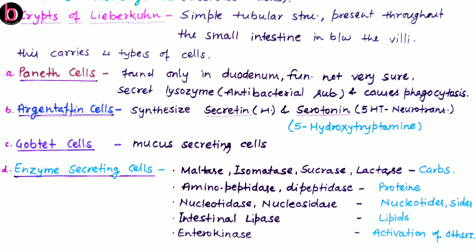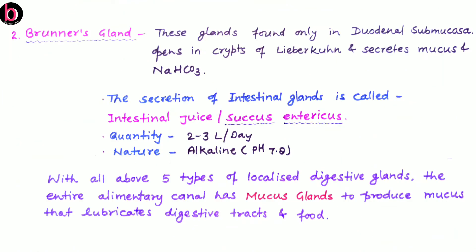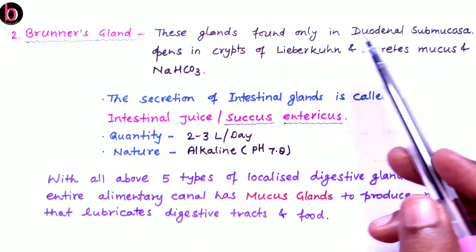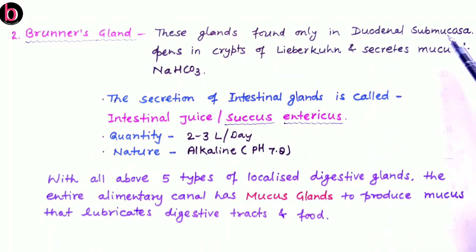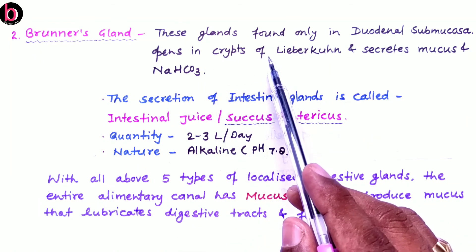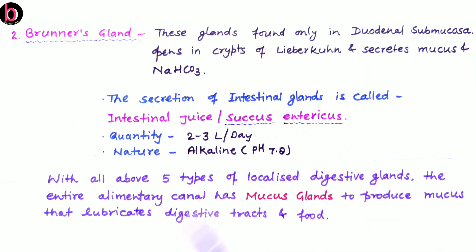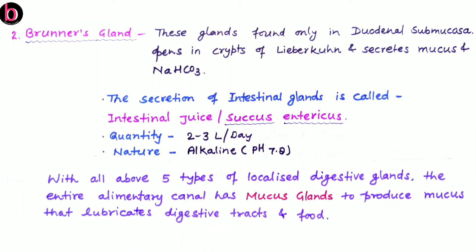Enterokinase never plays a direct role in digestion, but is helpful for activation of trypsinogen into trypsin, which is secreted by the exocrine part of the pancreas and helps in protein digestion. The second part of the intestinal gland is Brunner's gland, found only in the submucosal region of the duodenum. Brunner's gland also opens into the cavities of the crypts of Lieberkühn and plays a role in secretion of mucus as well as sodium bicarbonate.